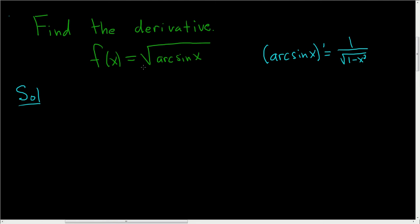Also, here we have a square root. That's not good. So let's rewrite this as arc sine x to the 1 half. That will make it easier to take the derivative, because now we have something to a power, so we can use the power rule.